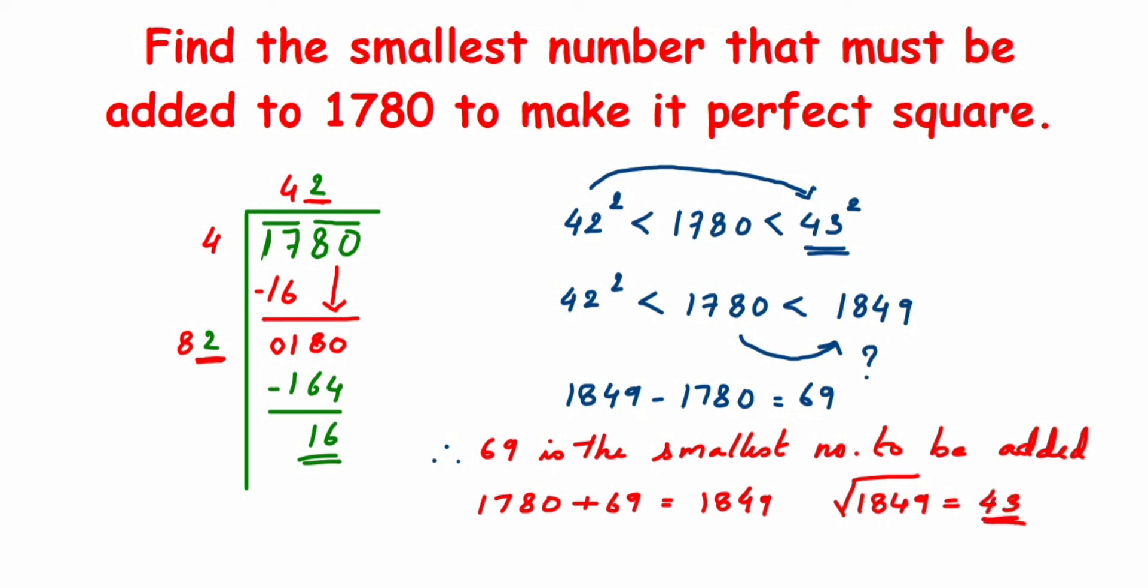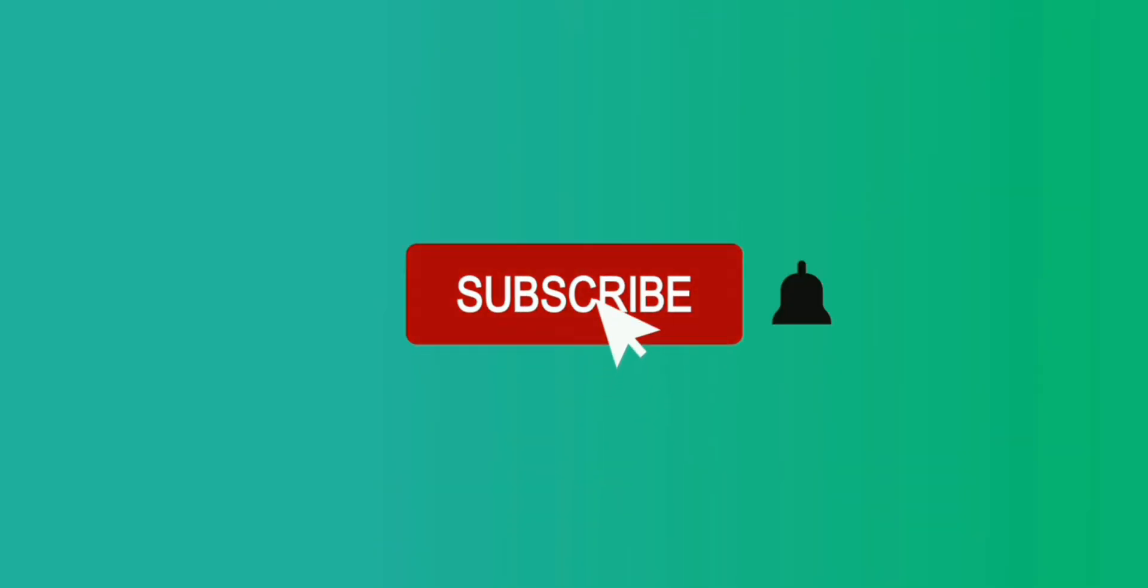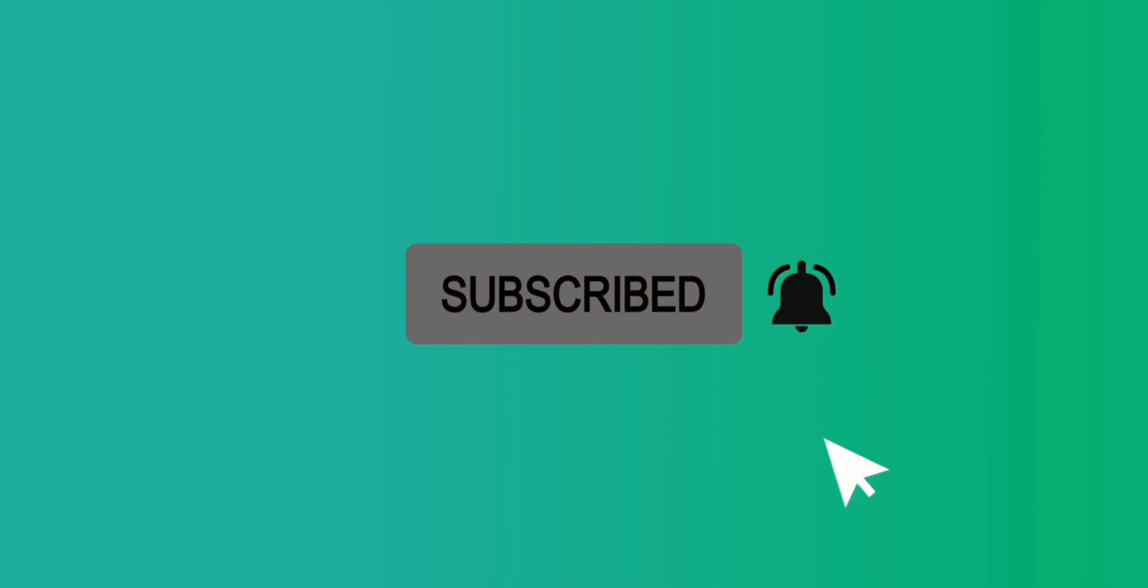That's it. This is how you have to find out the answer. Whatever quotient you got, that is 42 we got here, you take the next number and take the square of it. I hope it's clear. Thank you so much for watching.